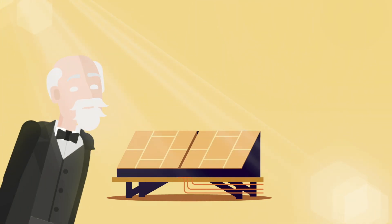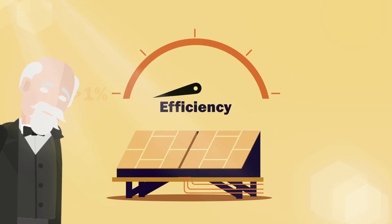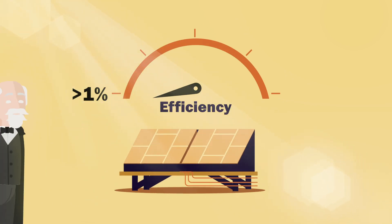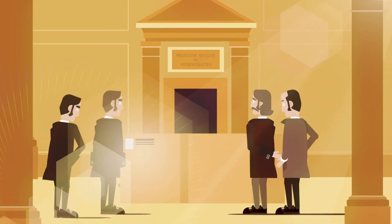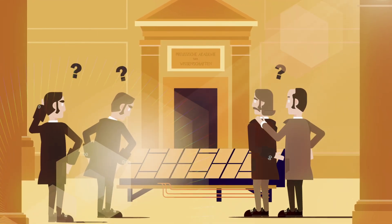Fritz had created the first solar cell, although unfortunately, it barely reached 1% efficiency. At that time, no one understood why this was happening, and the scientific community received these advances coldly.